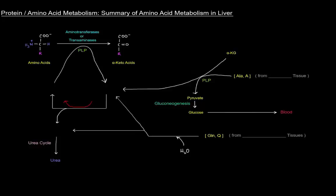In this video I want to give a summary of what's going on as far as amino acid metabolism in the liver goes. Up to the top left here we've got amino acids that have come from the digestion of dietary proteins, and before we can actually oxidize them for energy we have to remove their amino groups and turn them into their alpha-keto acid counterparts.